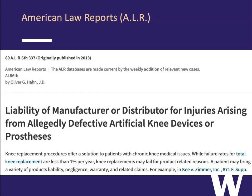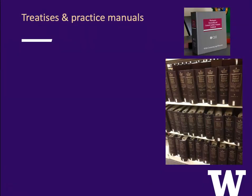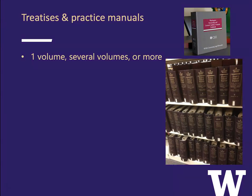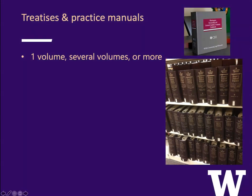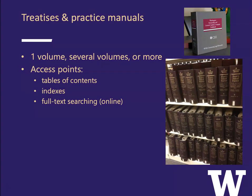Treatises and practice manuals can be one volume, several volumes, or more. We have a picture of the Washington Partnership and Limited Liability Company Desk Book — a practice manual called a desk book because the idea is that an attorney can have a copy on her desk. We also have a photo of Moore's Federal Practice, a very big treatise about civil procedure — you would need a very, very big desk to have all of it. Typically practice manuals and treatises have access points including tables of contents and indexes.